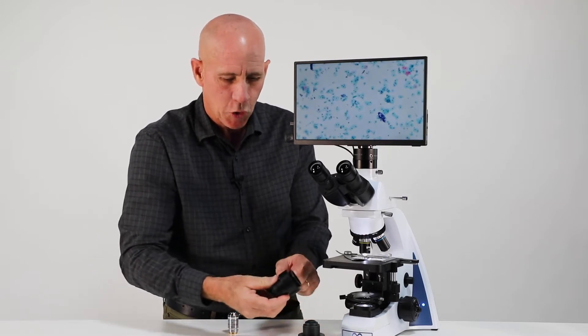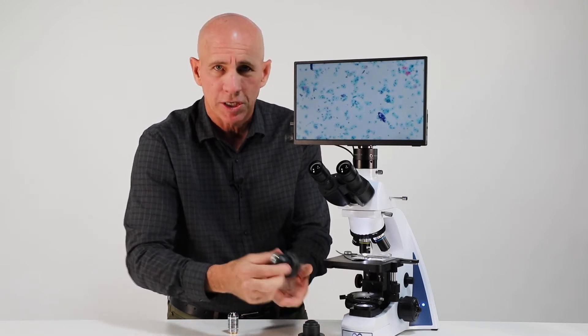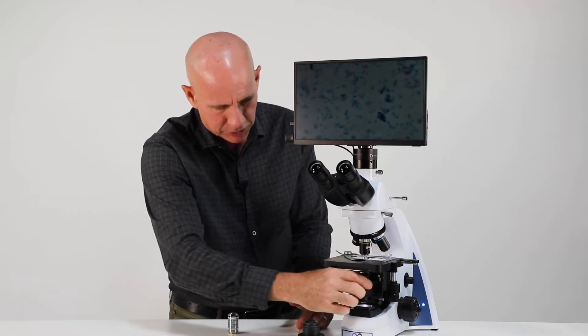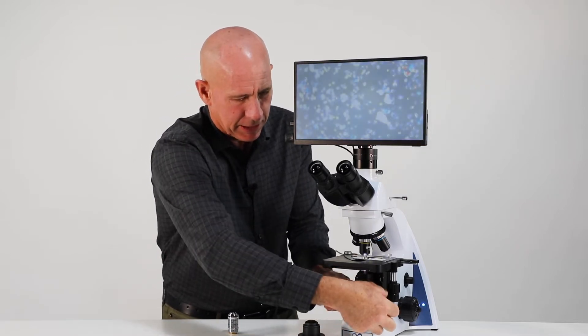But let's take that back out. The dark field condenser has no pin on it, there's no orientation, it doesn't really matter. So we're just going to slide it in and tighten it up.